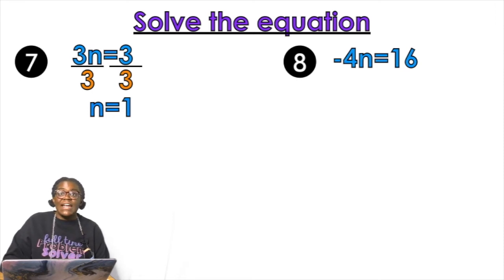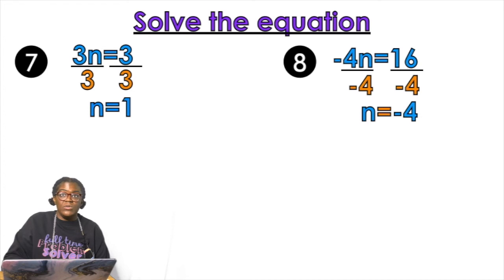So on the other side I need to get rid of a negative four. And it's touching the n by multiplication. So what do I do? Divide by negative four, divide by negative four, n equals 16 divided by negative four is negative four.